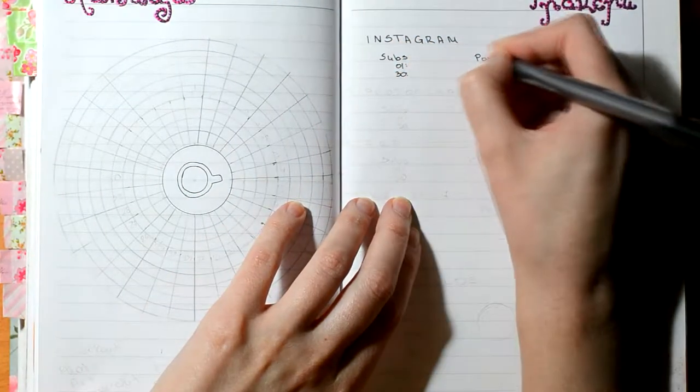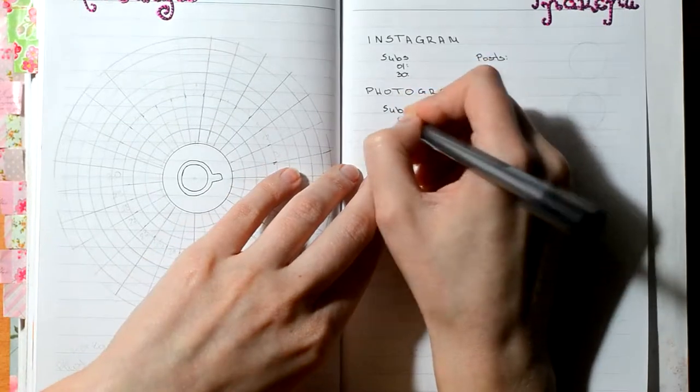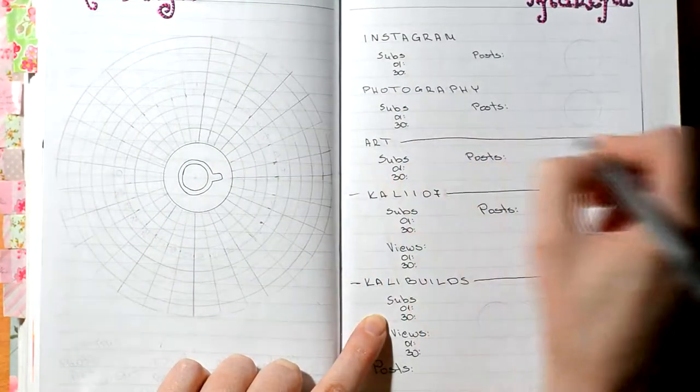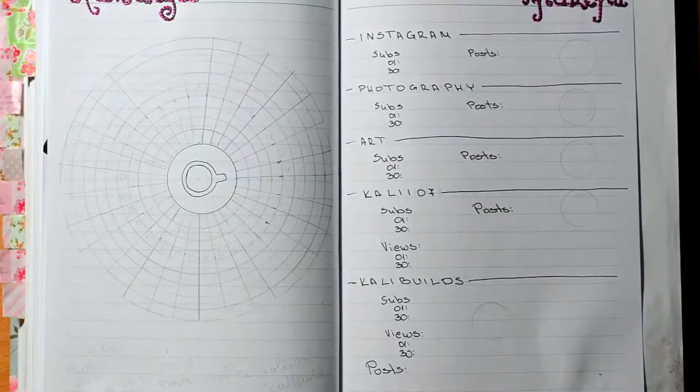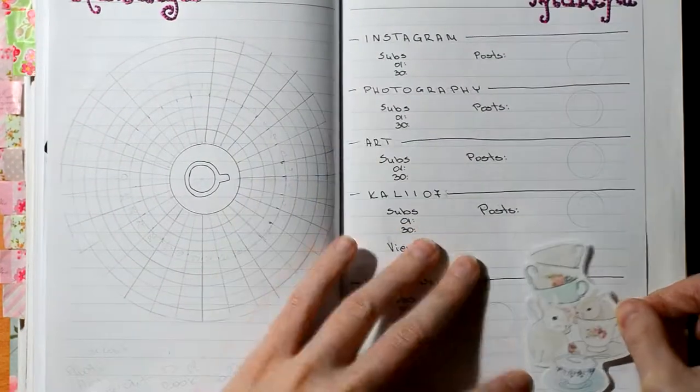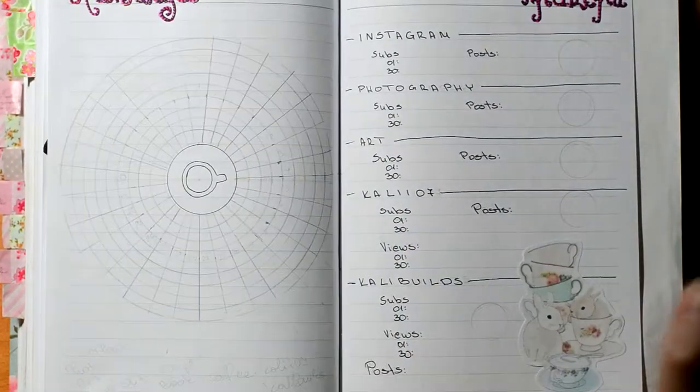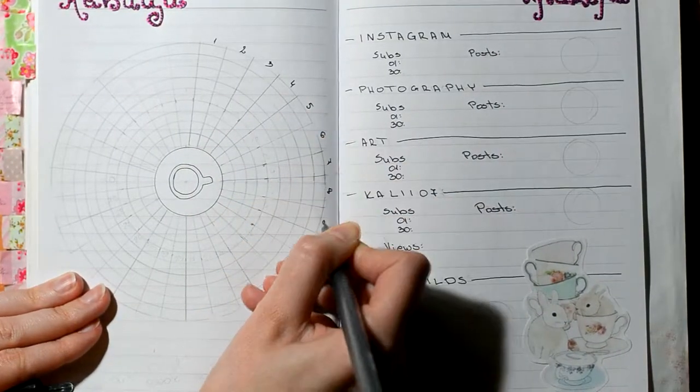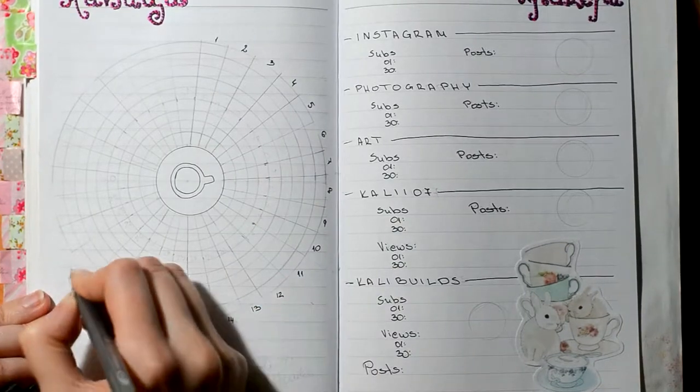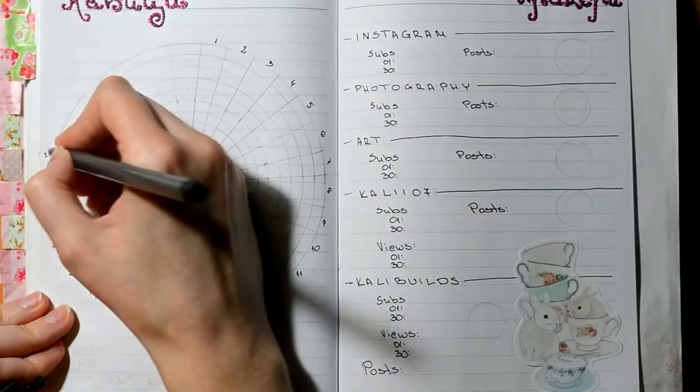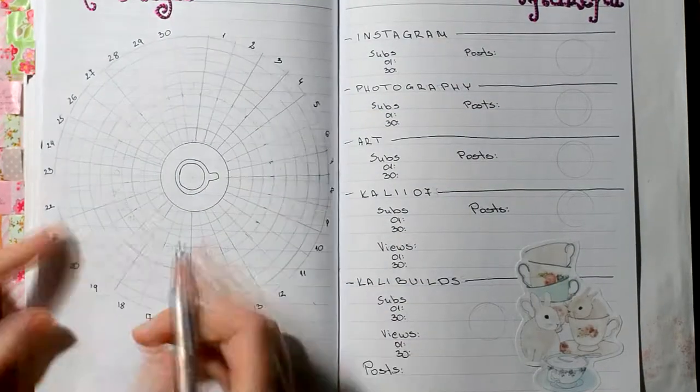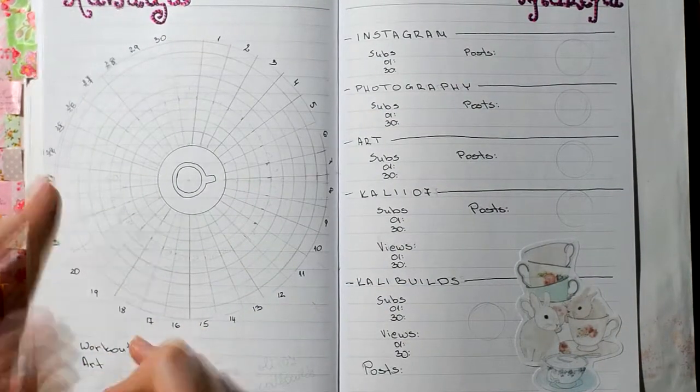On the other side I keep track of my Instagram and my YouTube. I just realized that I forgot my Twitter account. Yep, I just realized that. Oh well, I don't really use Twitter that much, so whatever. I added those stickers of the bunny and the teacups.